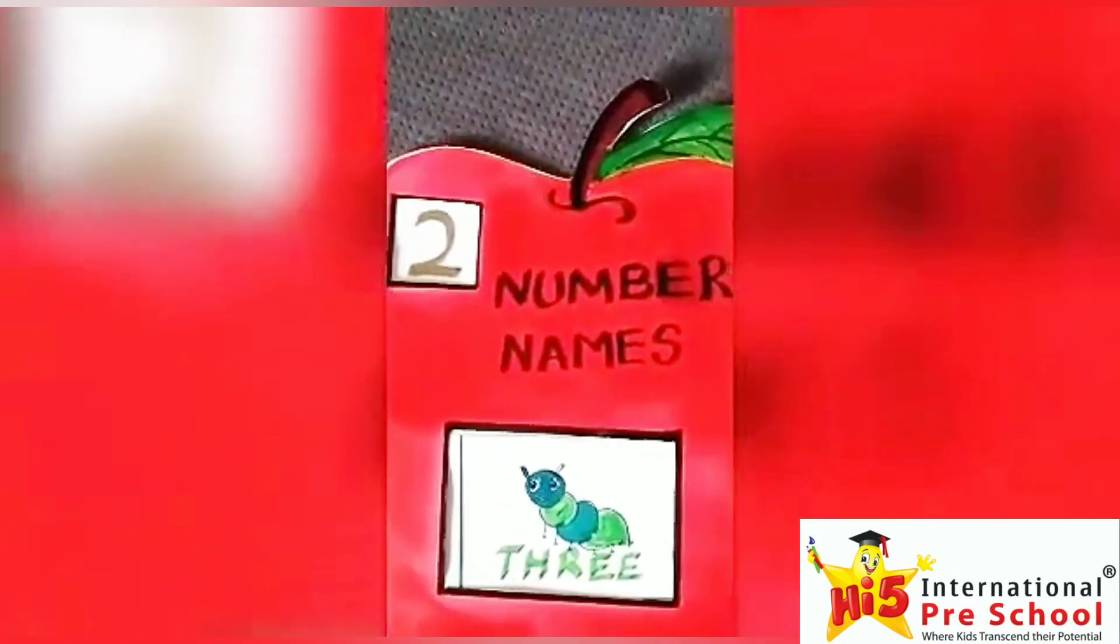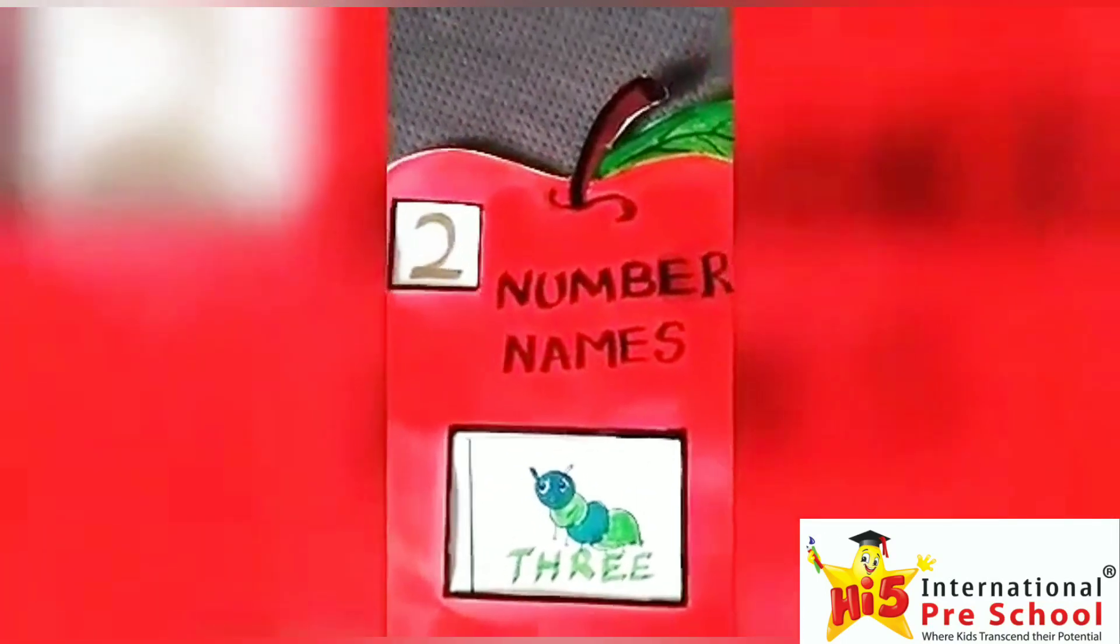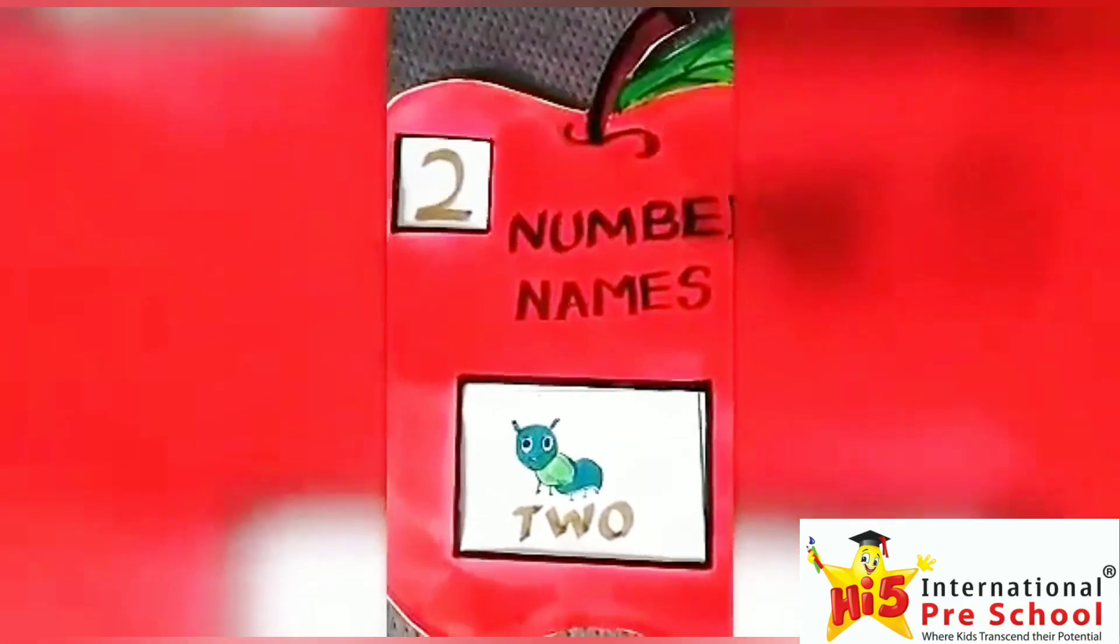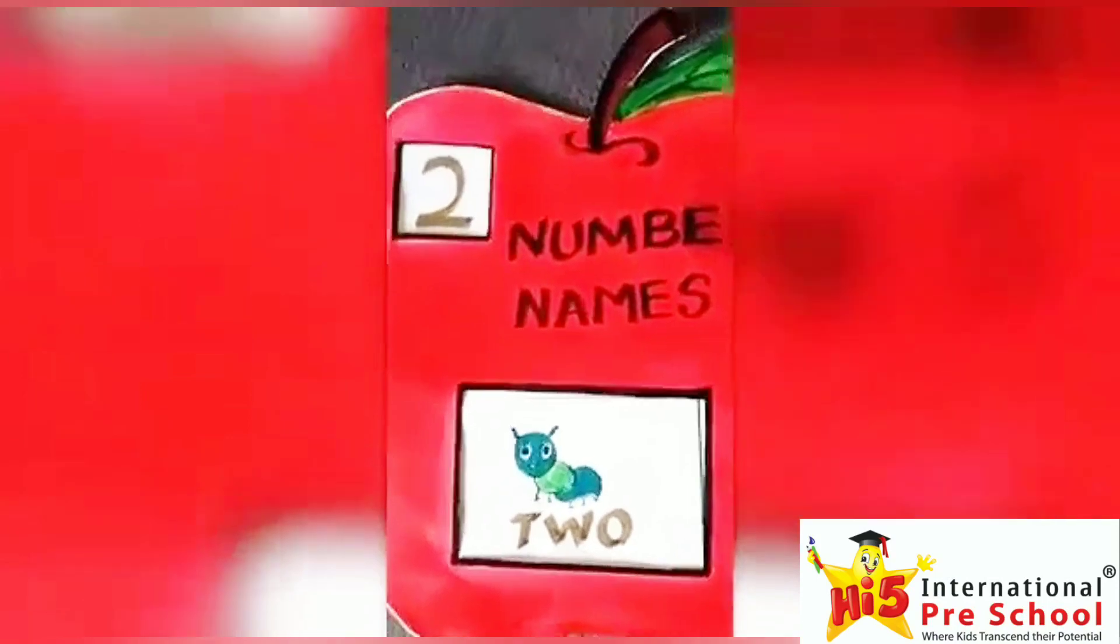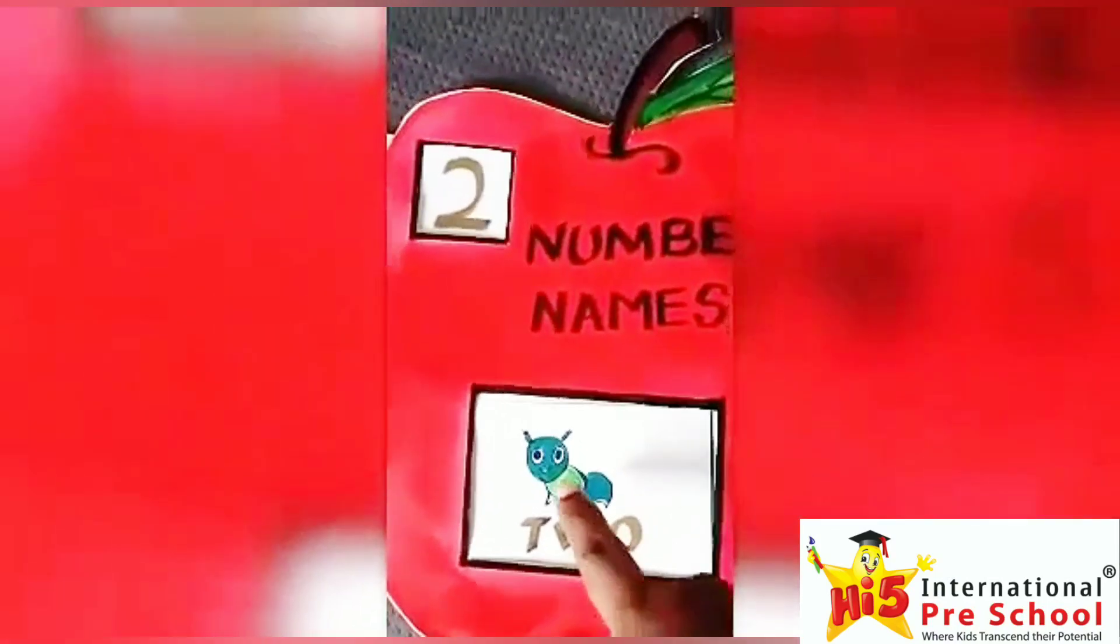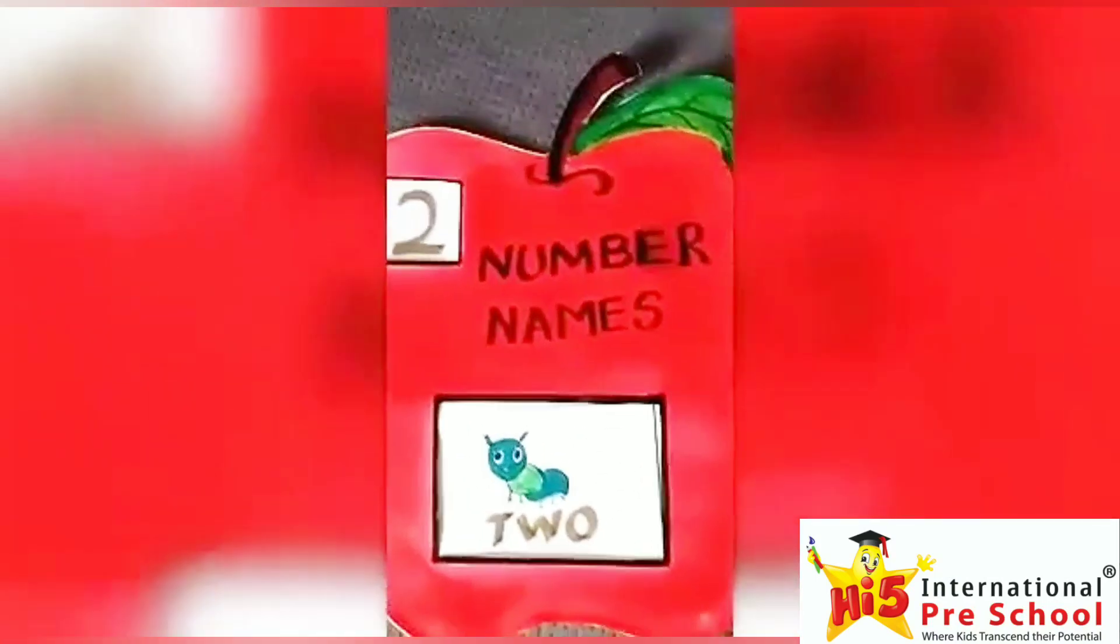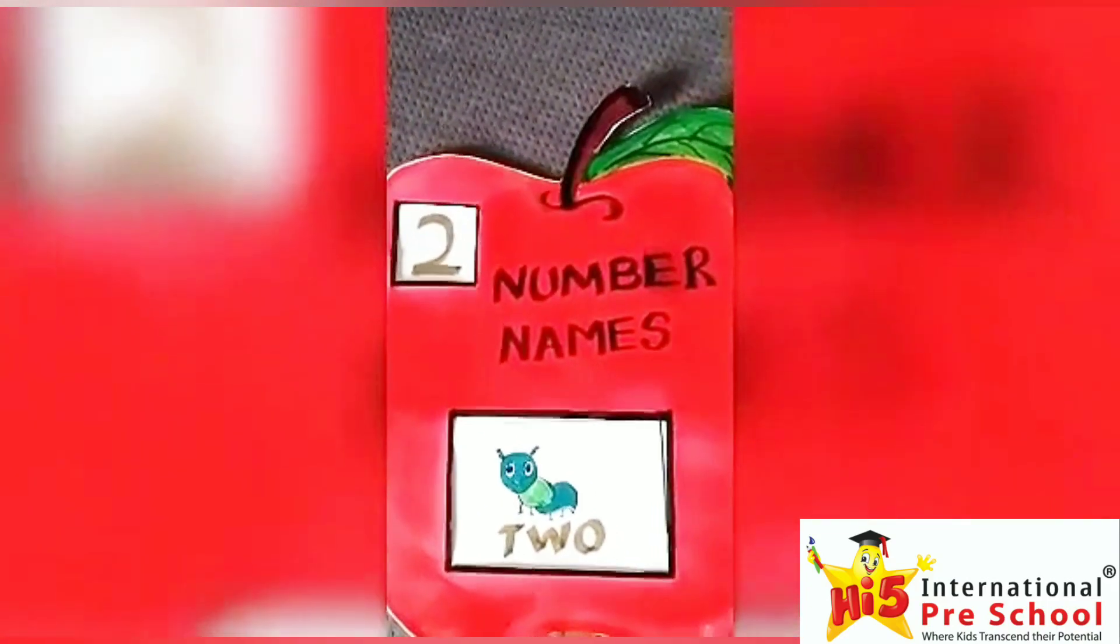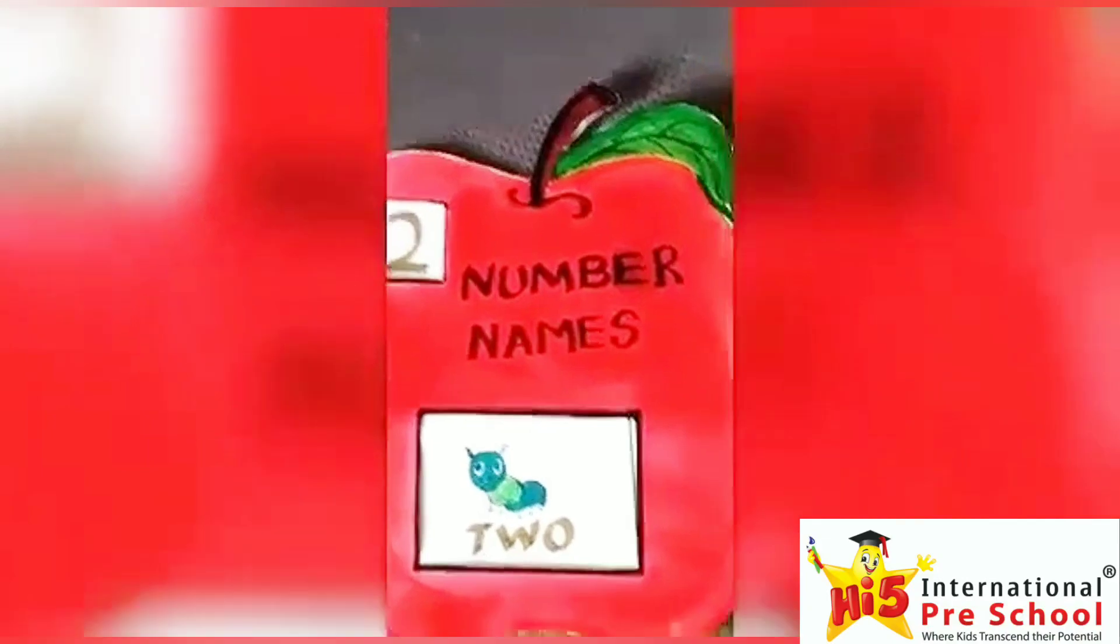1, 2 and 3. It's not matching. So, slightly move the strip. Another caterpillar. Can we count? 1, 2. So, 2 compartments. It's matching. T, W, O, 2.